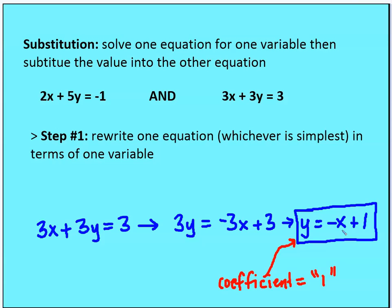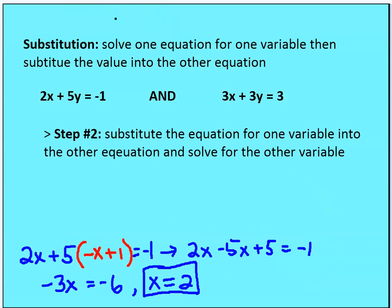So I'm rewriting for y in terms of x: y equals negative x plus one. Now I'm going to take this equation and substitute it back into the other equation. I've taken the second equation, rewritten it for one variable, and now I'm going to substitute negative x plus one — which equals y — into the first equation and solve for x.